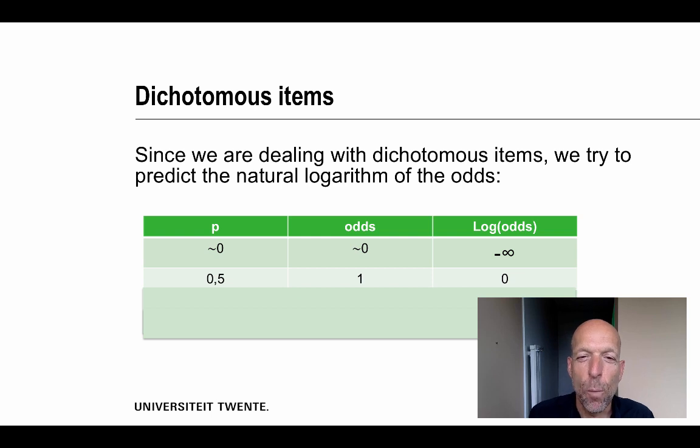p divided by its complement, which is the same, is of course 1. And the natural logarithm of 1 is 0. That's exactly the middle point, as we will see later in this micro lecture.